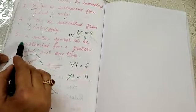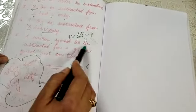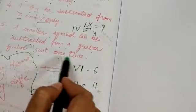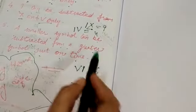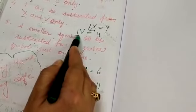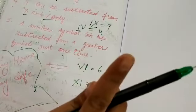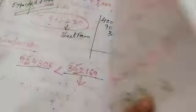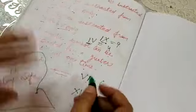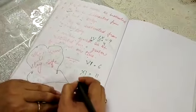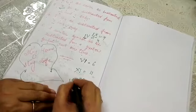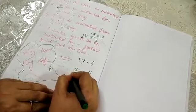The last property is: a smaller symbol can be subtracted from a greater symbol just one time only. These are the main properties you have to learn. Your assignment is to write the counting from 1 to 30 in Roman numbers.